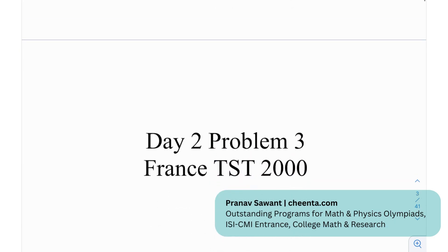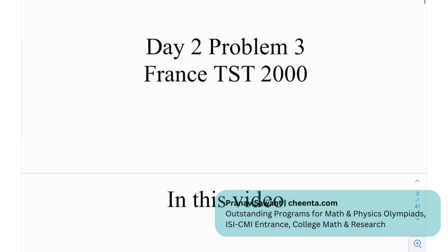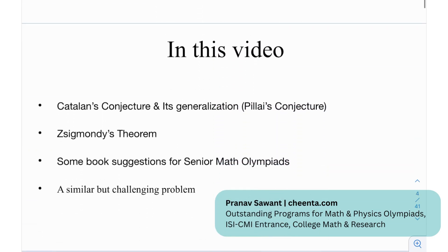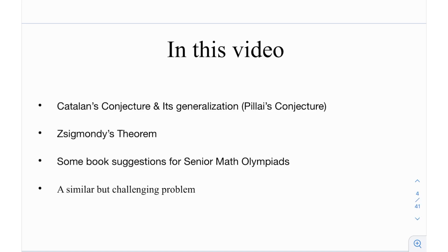This is the third problem from day two of the France TST in the year 2000, and it happens to be the last problem on the team selection test. In this video, we're going to be looking at Catelyn's conjecture and a generalization called Pillai's conjecture. Pillai's conjecture is not really related to this problem, but it's good to discuss a little bit about it. After that, we have Zsygmondy's theorem, which we've discussed a couple of times before, some book suggestions for senior math olympiads, and at the end, a similar challenging problem.